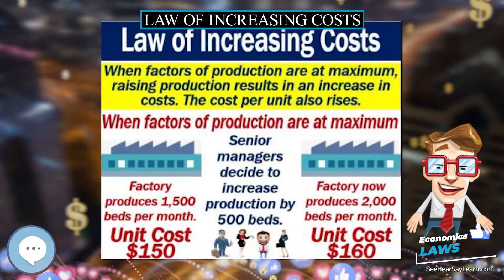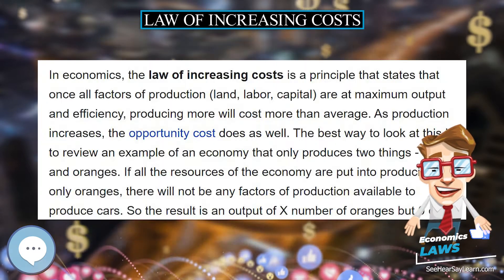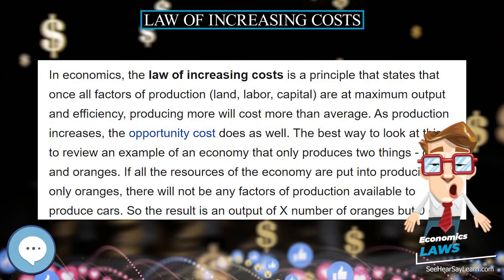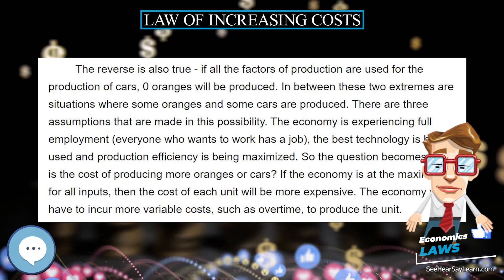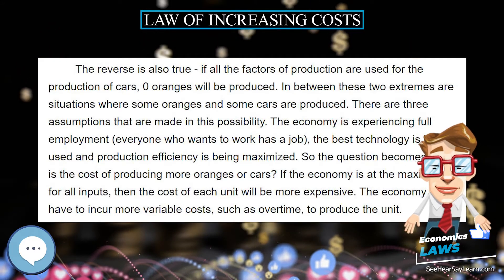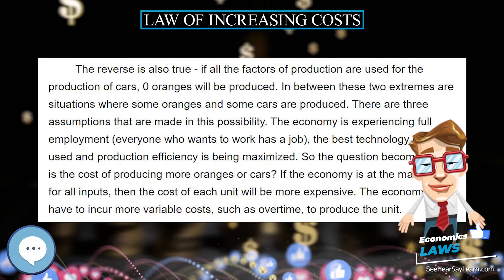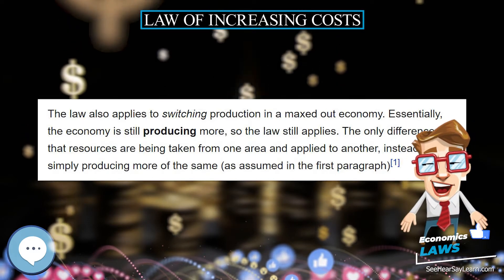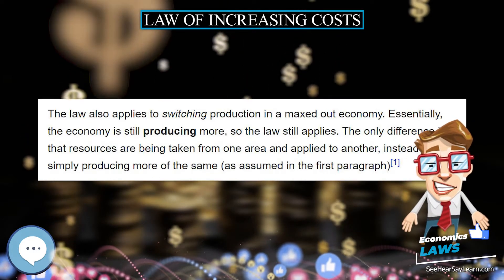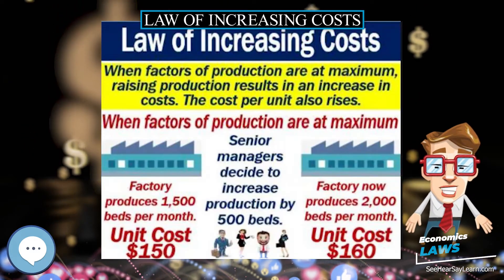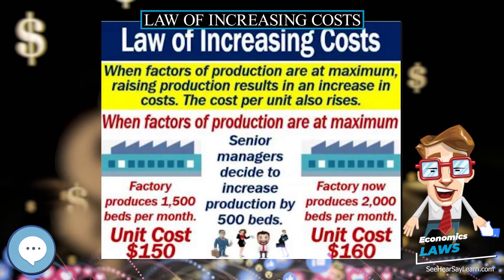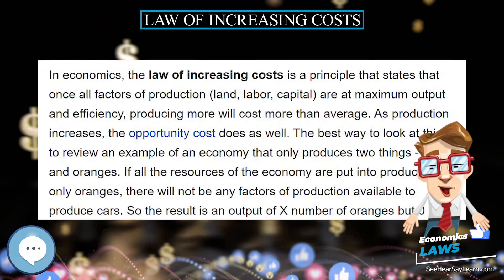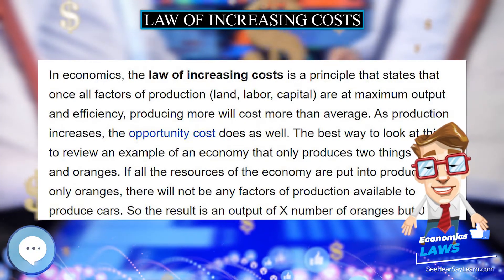As production increases, the opportunity cost does as well. The best way to look at this is to review an example of an economy that only produces two things: cars and oranges. If all the resources of the economy are put into producing only oranges, there will not be any factors of production available to produce cars. So the result is an output of X number of oranges but zero cars.